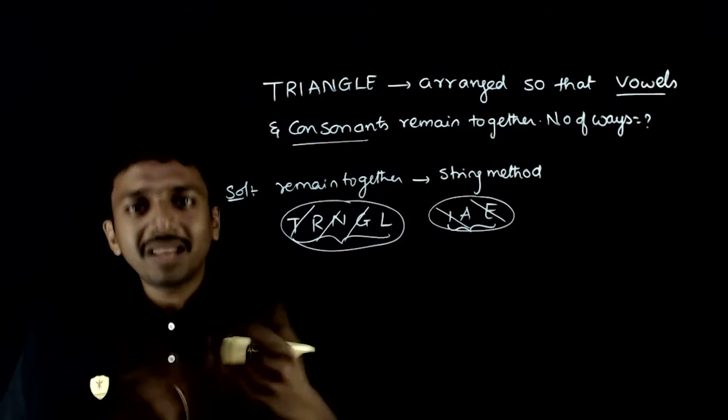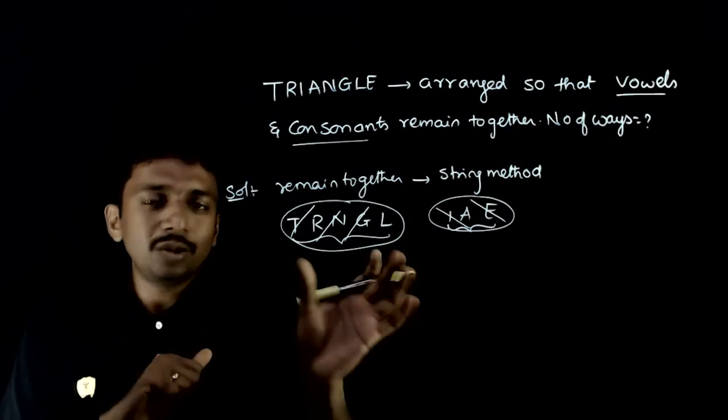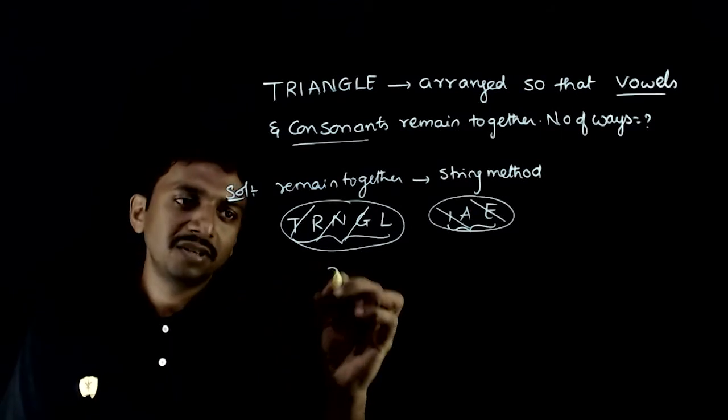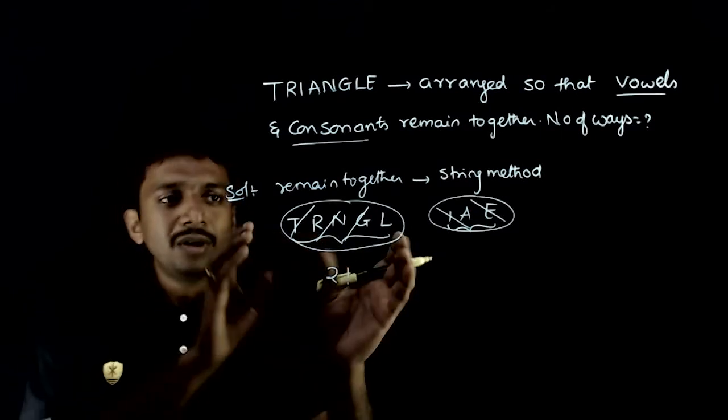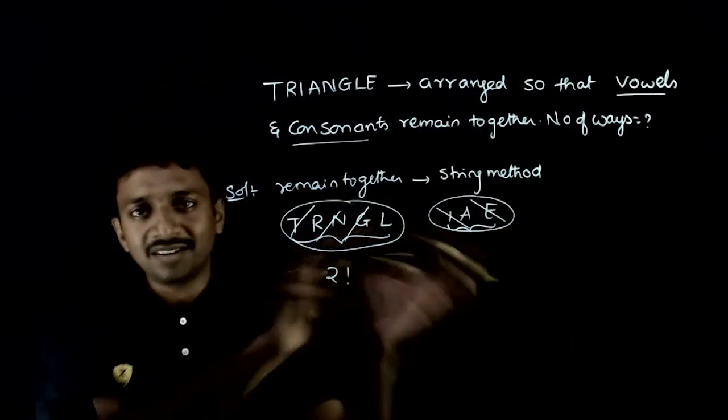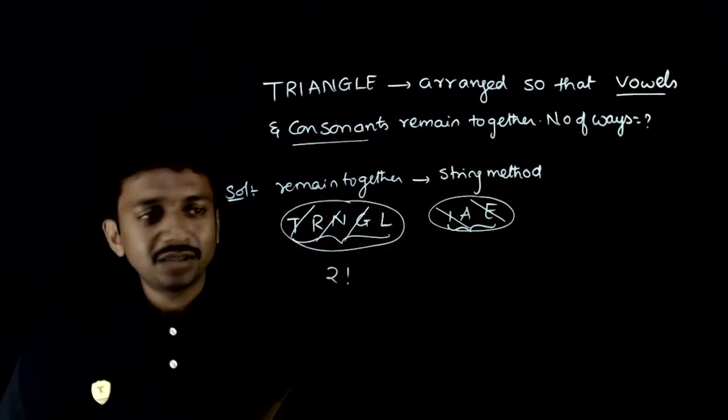Two entities can be arranged in 2 factorial ways. Either this first or this later. That is 2 factorial.